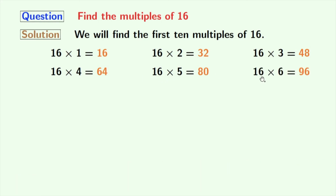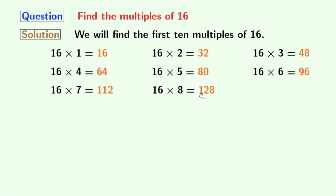Next, multiplication of 16 and 6 gives us 96. Multiplication of 16 and 7 gives us 112. Multiplication of 16 and 8 gives us 128.